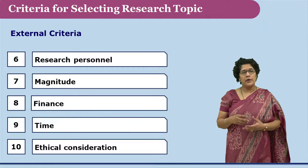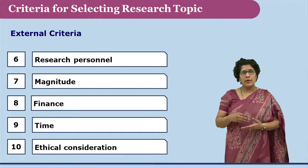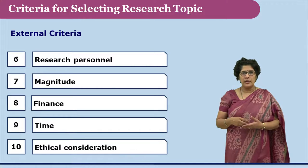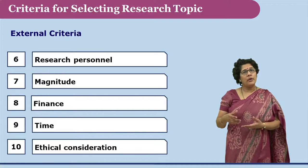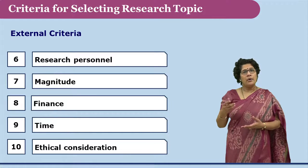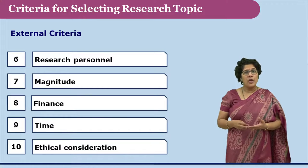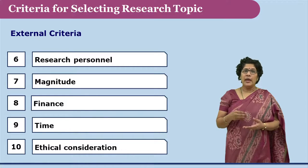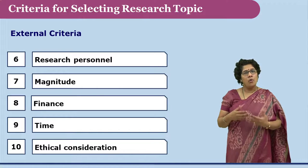The last factor under external criteria is ethical considerations. Especially for social sciences research, the researcher needs to deal with human beings, and at times one ends up asking them questions they are not comfortable answering. Their permissions may be required for data collection, which is especially true for observations or interviews. At times the sample may not be ready to share their own work with the researcher for research purposes.